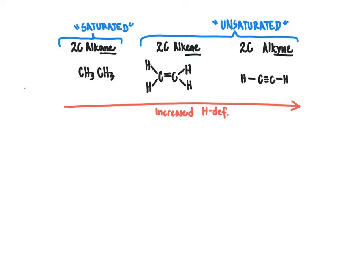The term hydrogen deficiency can be used more broadly to predict the number of rings and pi bonds that must be present in a molecule. We refer to this as the index of hydrogen deficiency. For each hydrogen atom we bring into the molecule, we have an increased number of single bonds relative to double bonds; conversely, if we take out hydrogens, we expect more double bonds. In practical terms, the index of hydrogen deficiency equals the number of rings in a molecule plus the number of pi bonds.